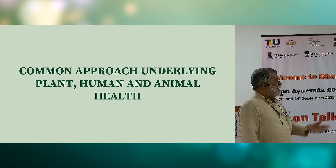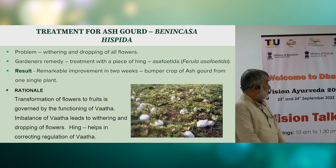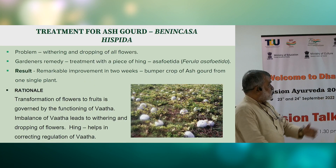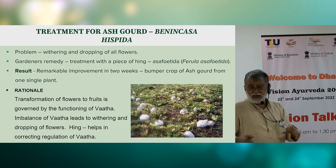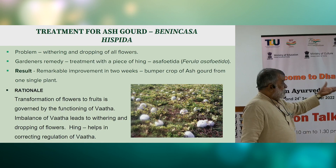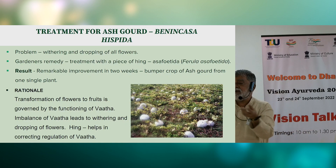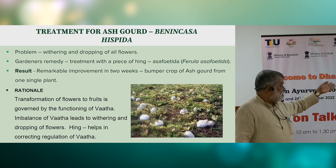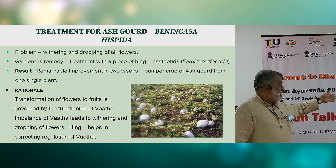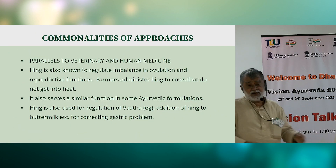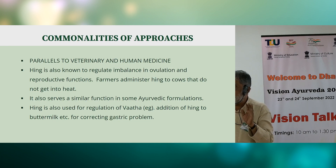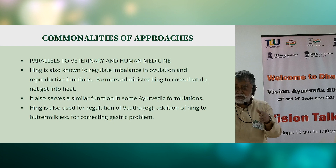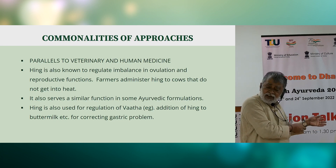A very interesting insight is the common approach underlying plant, human and animal health. For example, there is a problem with Kushmanda where flowering is abundant but fruits drop without forming proportionately. Farmer wisdom suggests burying a piece of asafoetida or hing near the root and irrigating — we tested it and found that the Ayurvedic wisdom behind this is that the transformation is governed by the regulation of Vata, and hing helps correct that. What is mind-blowing is that Garbhasthapaka or Garbhaposhaka gana dravyas, which work for the human female, are also used in ethno-veterinary medicine and for plants.